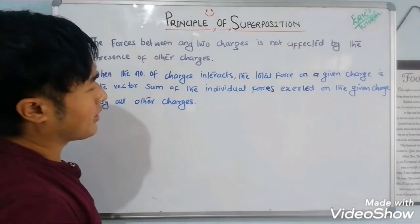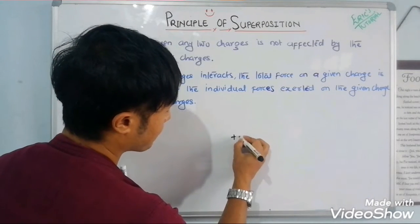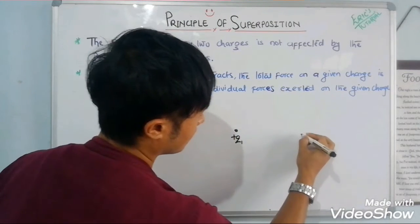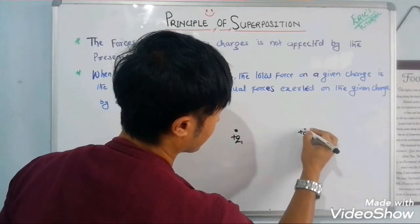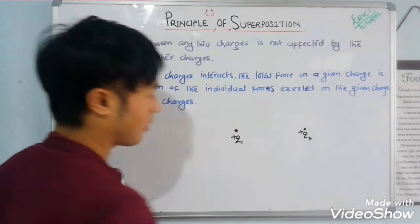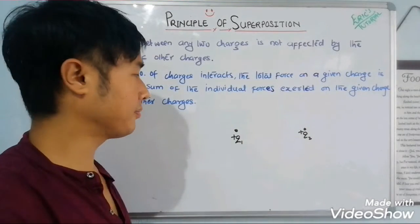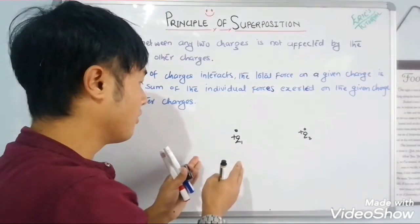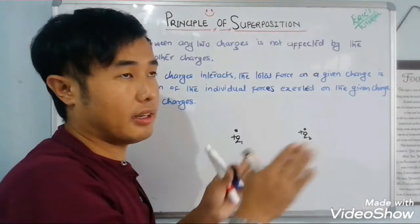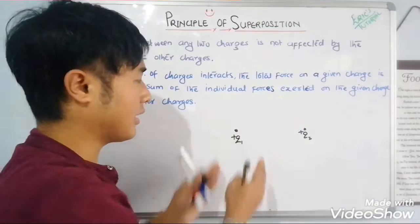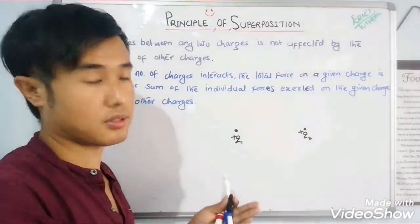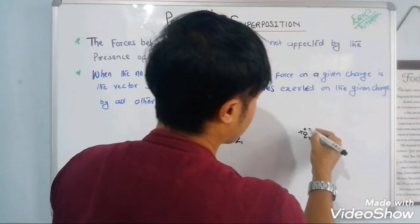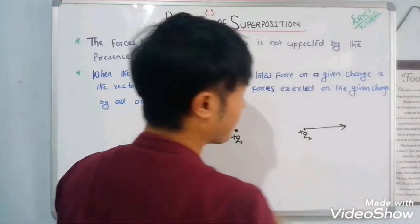So let me consider two point charges, plus q1 and plus q2. When these two charges interact, of course a force is exerted — a repulsive force, since they are like charges. So q1 and q2 experience a repulsive force in nature.